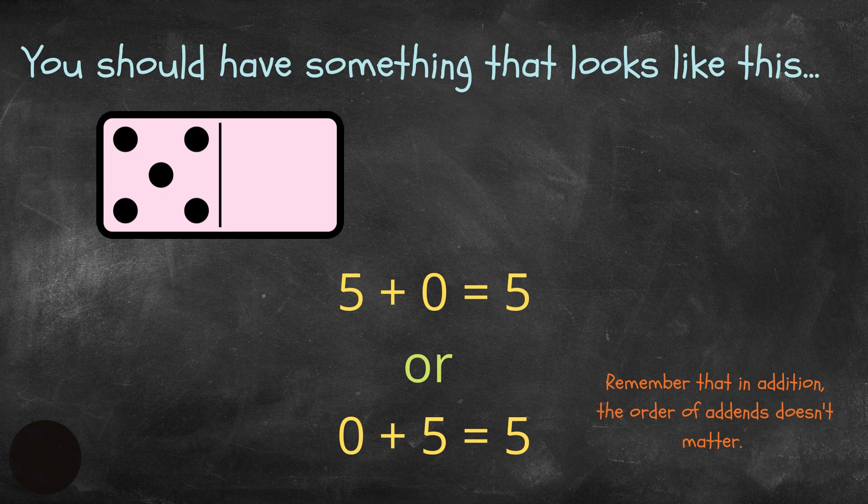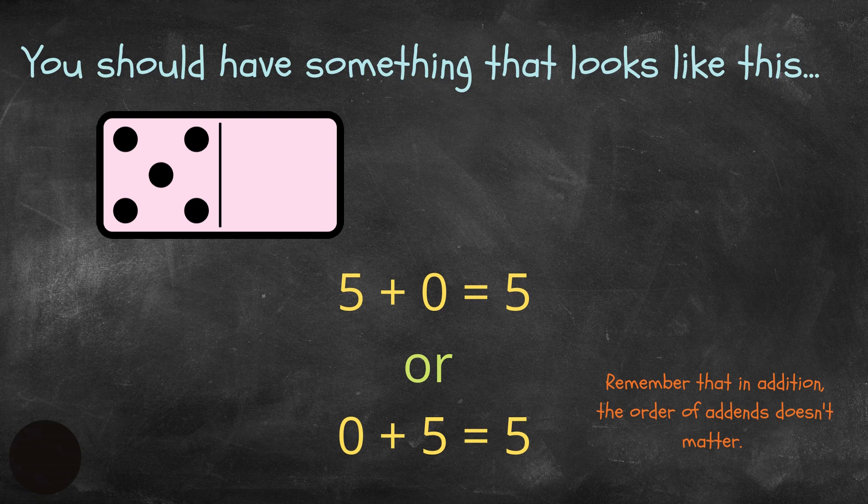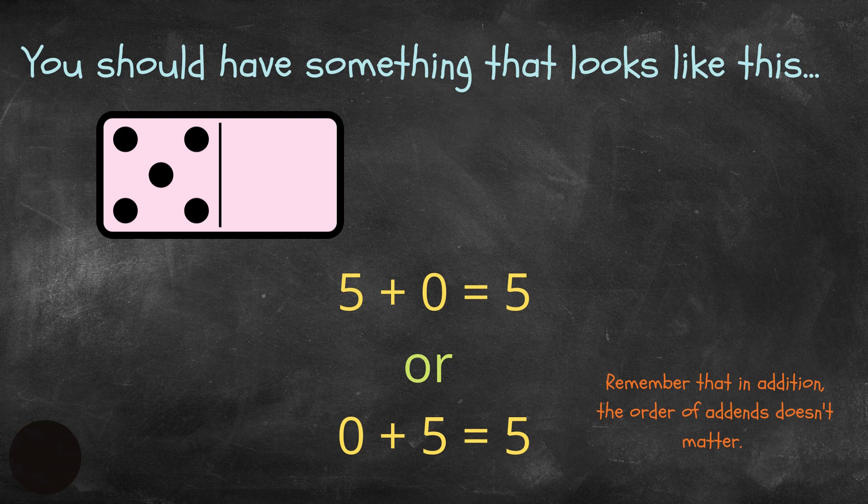You should have something that looks like this. Five plus zero equals five or zero plus five equals five. Because remember that in addition, the order of the addends doesn't matter. Whether you put five plus zero or zero plus five, the sum should be the same.